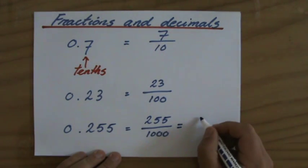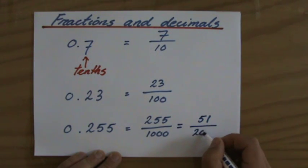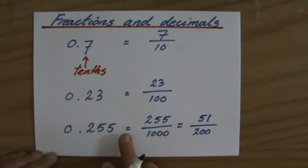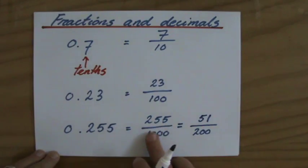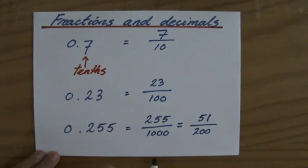So 0.255 is equivalent to, is the same as, 255 over a thousand, and if I simplify that, that is 51 over 200.